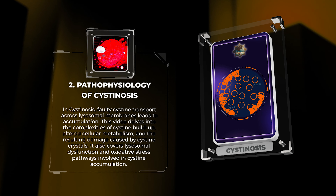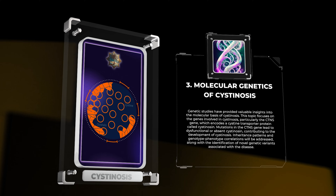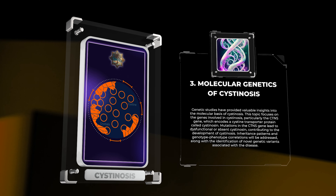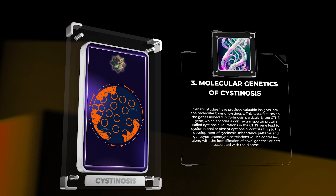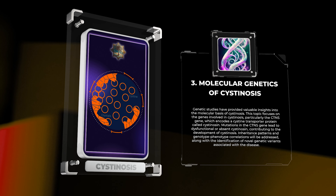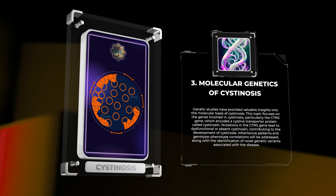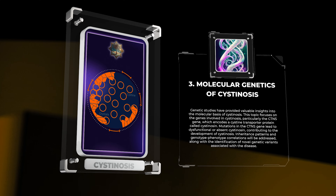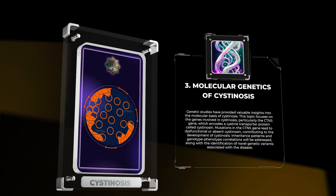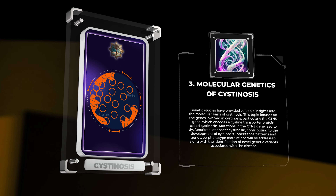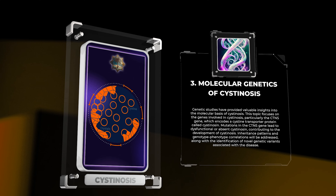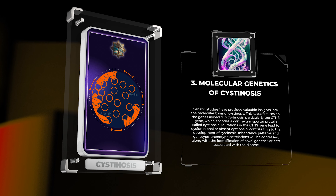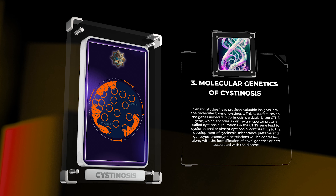Genetic studies have provided valuable insights into the molecular basis of Cystenosis. This topic focuses on the genes involved in Cystenosis, particularly the CTNS gene, which encodes a cysteine transporter protein called Cystenosin. Mutations in the CTNS gene lead to dysfunctional or absent Cystenosin, contributing to the development of Cystenosis. Inheritance patterns and genotype-phenotype correlations will be addressed, along with the identification of novel genetic variants associated with the disease.